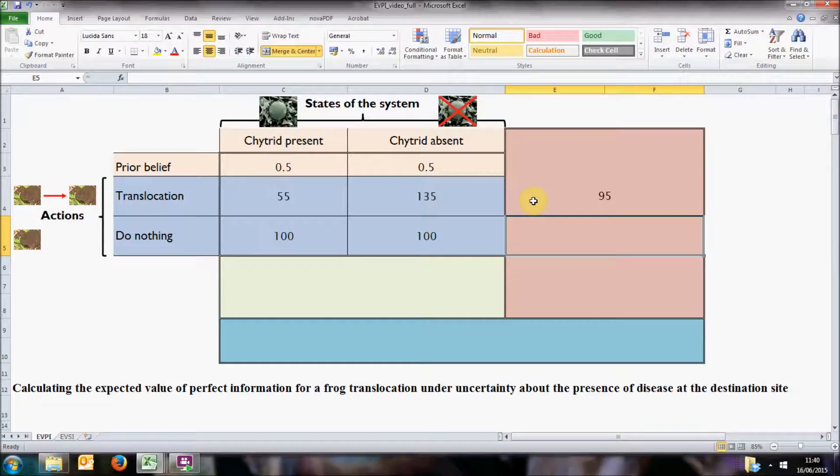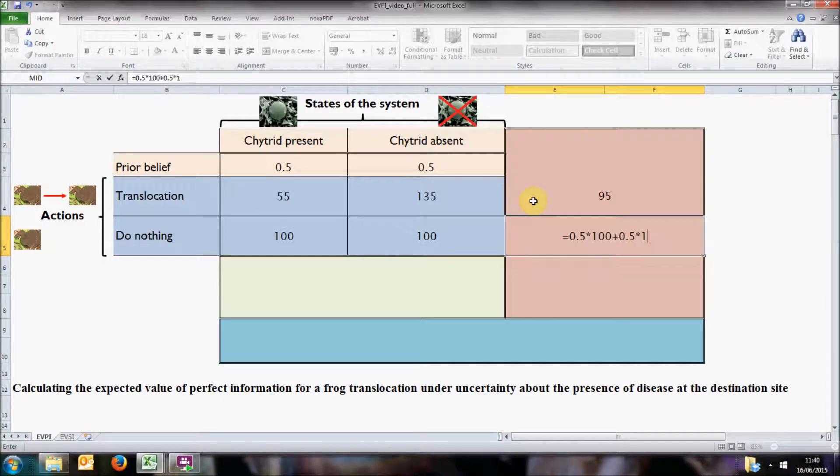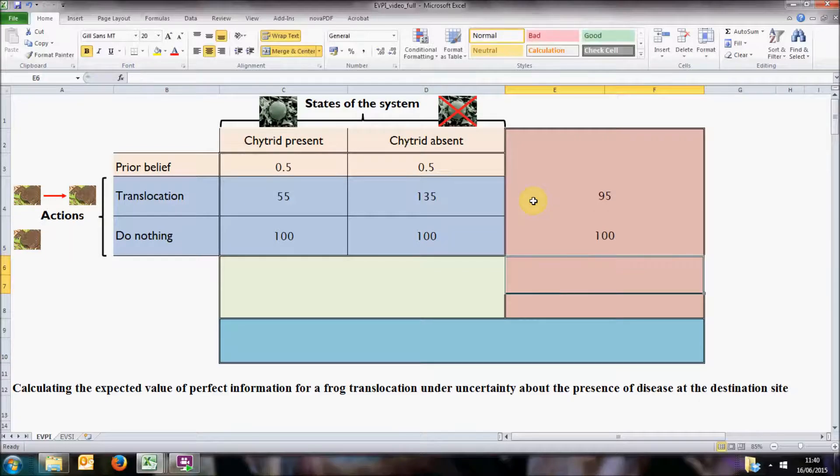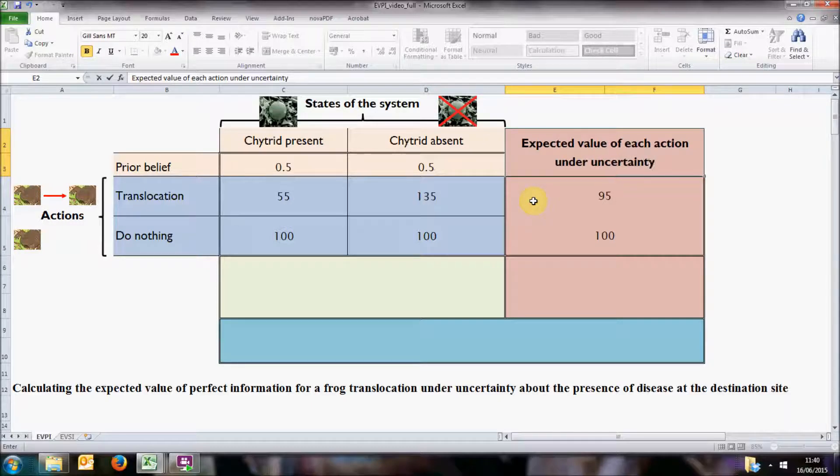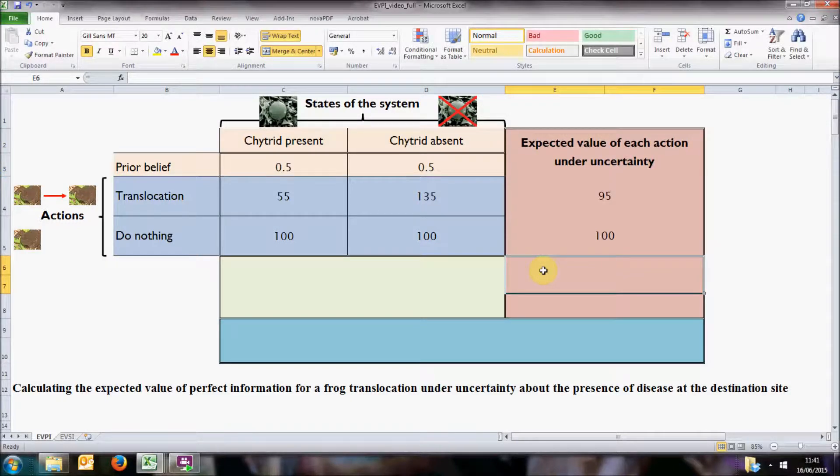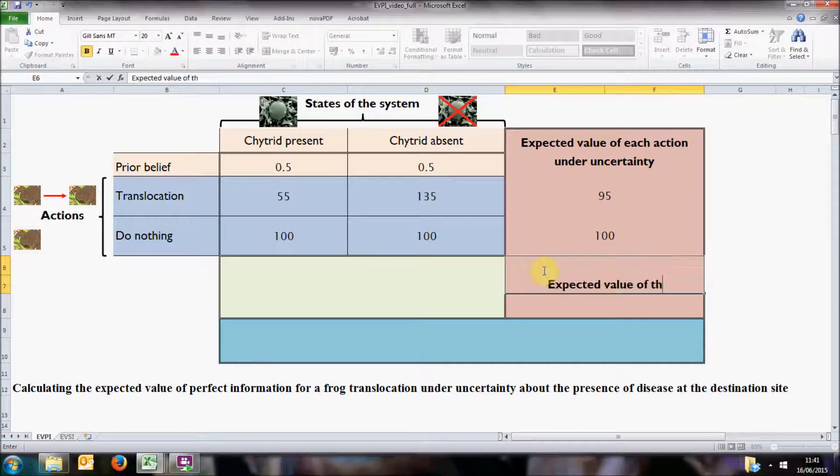If we choose not to translocate, we have the same chance of getting 100 individuals, so that is also the expected value of doing nothing. Now the expected value of the decision under uncertainty is simply the value of the decision with the best expected value across uncertainty. In this case, based on these predictions, under the current uncertainty, we would choose not to translocate and would expect to get 100 individuals.